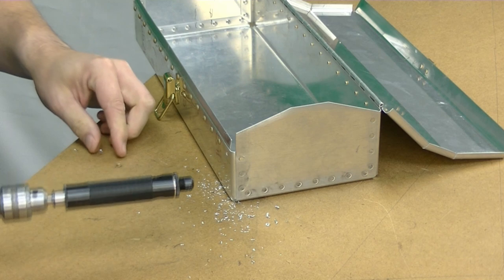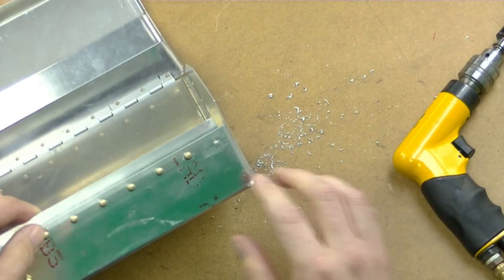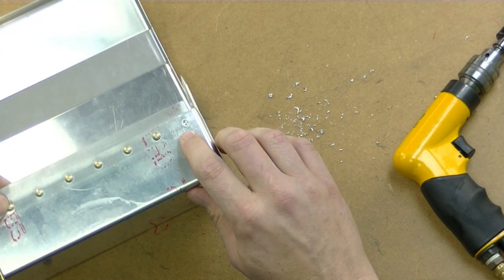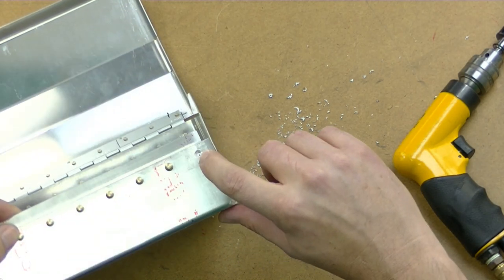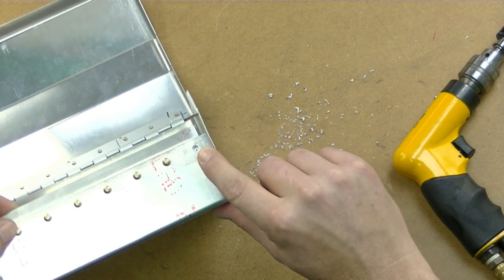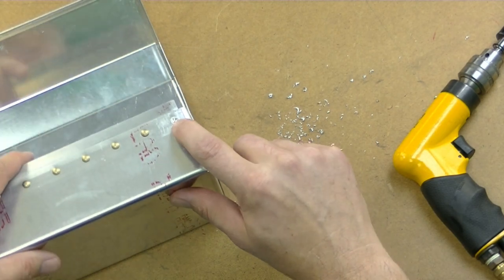Then drill the depth of the rivet head, which I got that about right because the head just fell off. You can see that it's drilled just the head off and it's left the rivet tail in the hole. So now I'd come back with a number 30 bit to finish that.